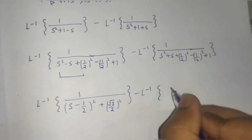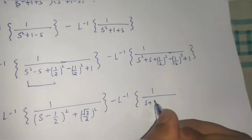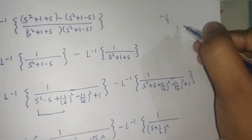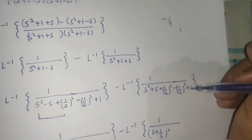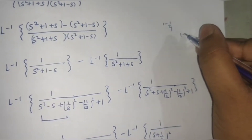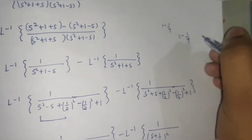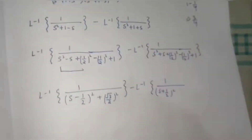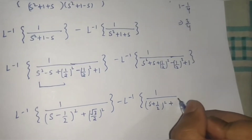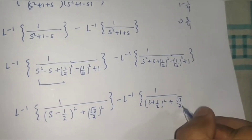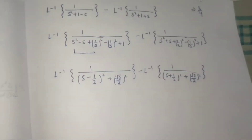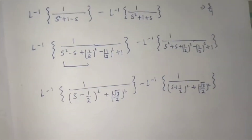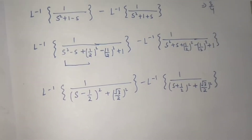Minus the Laplace inverse of 1 upon S plus 1 by 2, whole squared, and 1 minus 1 by 4 gives 3 by 4 again, so plus root 3 by 2, whole squared. Perfectly fine till now. Now you must have read about first shifting in Laplace inverse.